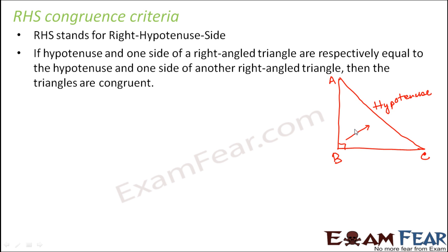And these are the other two sides. Now whenever we compare two right angled triangles for congruence, we already know that there is a 90 degree angle in both the triangles. That means one angle is equal in both the triangles. So the right angle part is done.